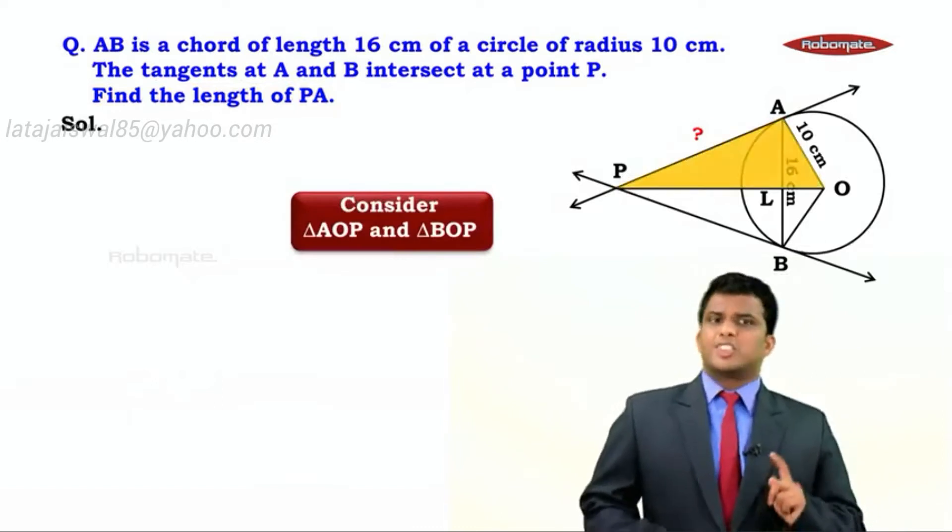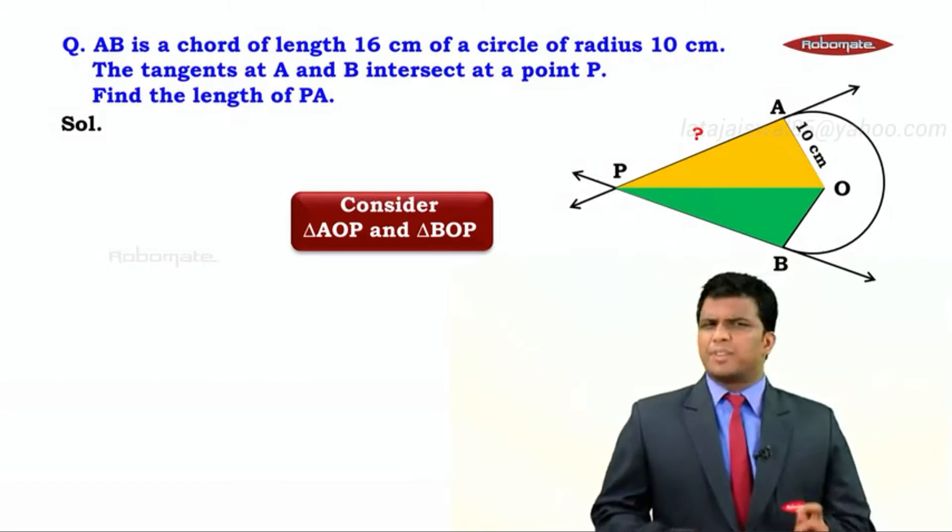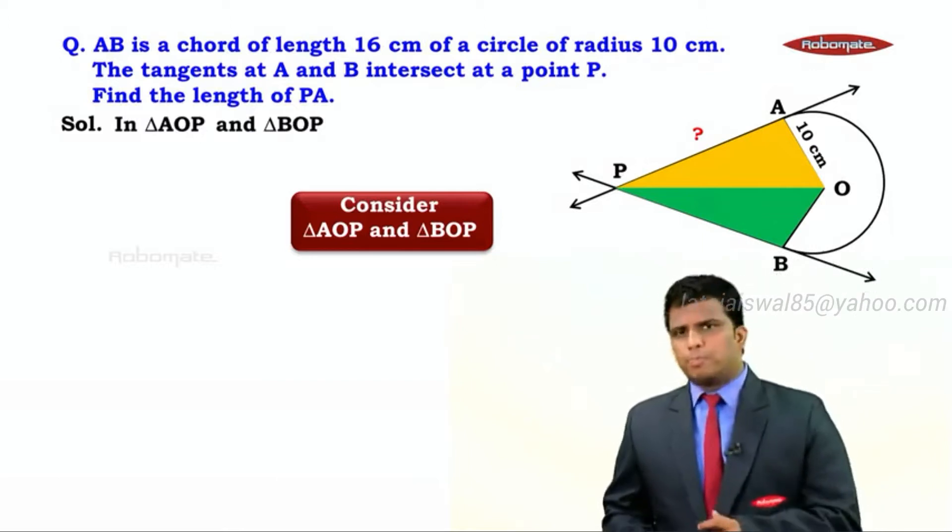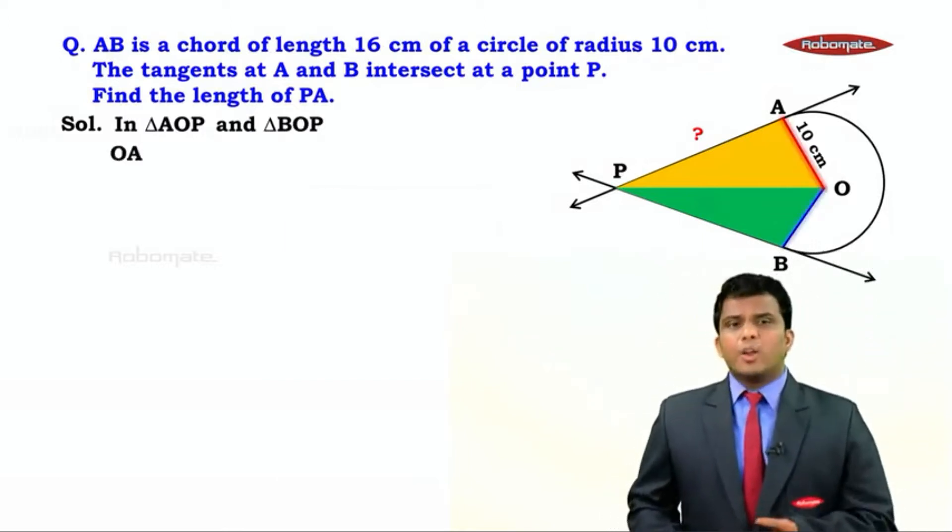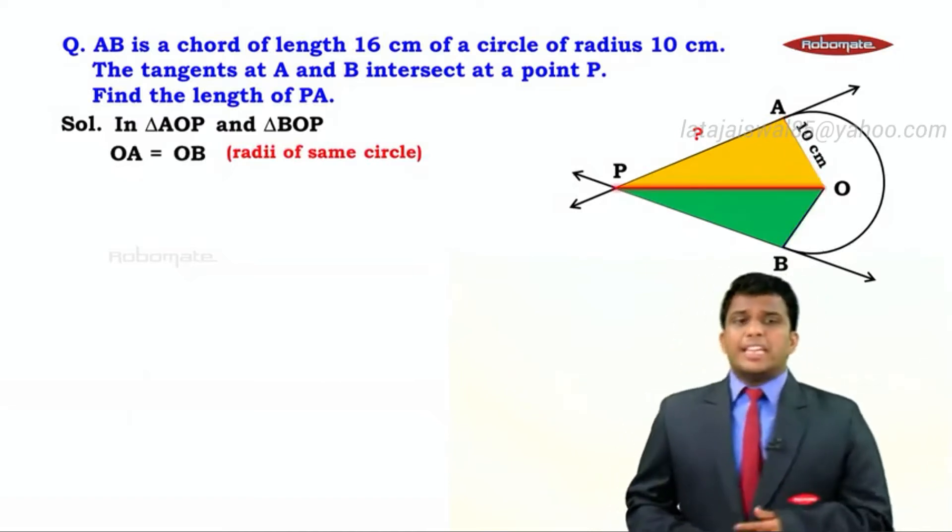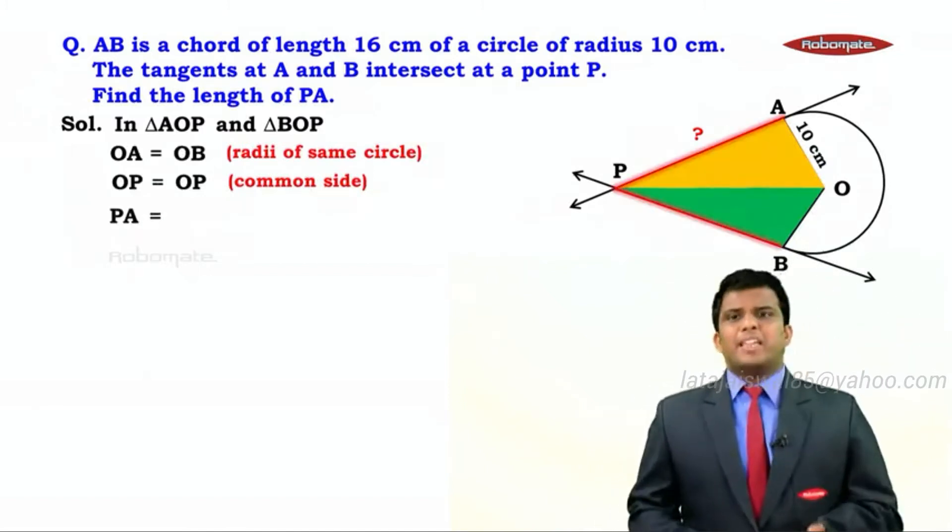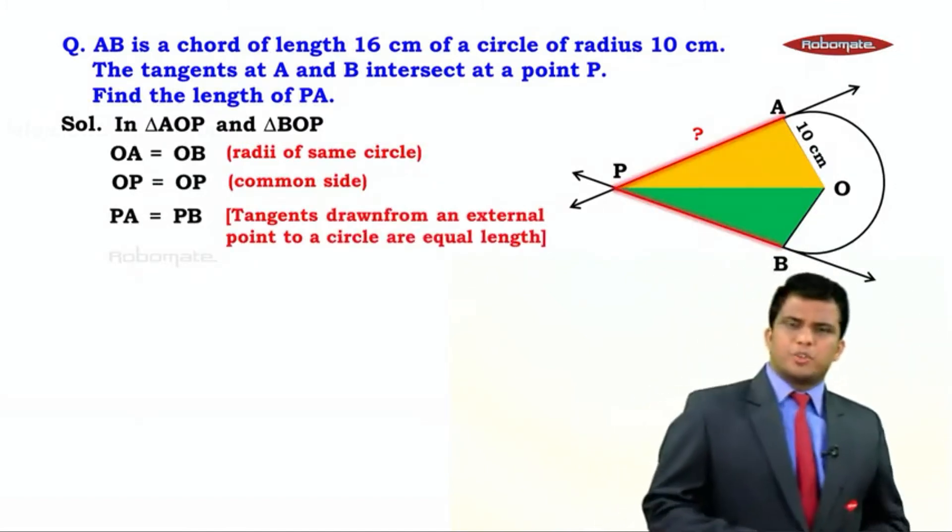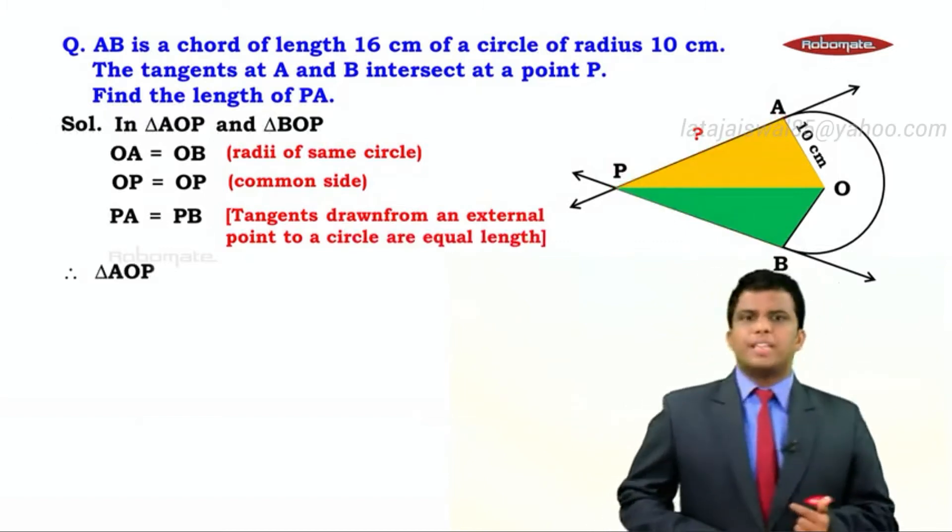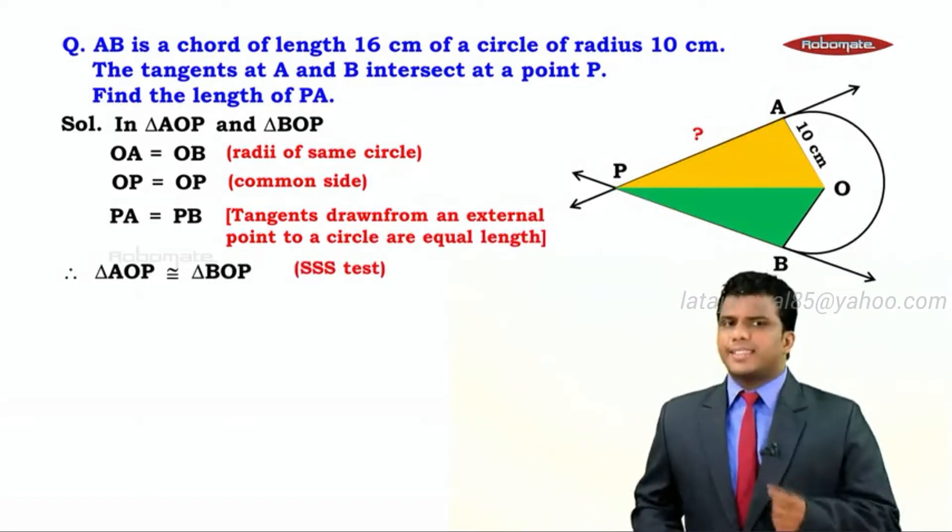Let's observe the two triangles, triangle AOP and triangle BOP. In triangle AOP and triangle BOP, we can see that AO equals BO because they are radii of the same circle. We have OP equals OP, it's a common side, and further AP and BP are equal. Tangents from an external point of a circle are equal. These conditions will help us conclude that triangle AOP is congruent to triangle BOP by the SSS test.